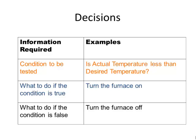What a decision is, is a statement that allows us to choose one path or another based on a certain condition. What kind of information do we need to give a decision statement? Well, first we have to tell it what condition is being tested. In our thermostat example, we might ask, is actual temperature less than desired temperature?